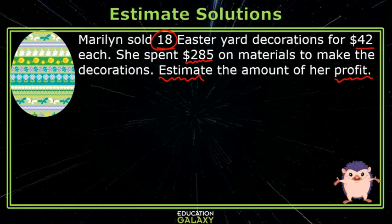So we're going to estimate, and we'll round 18 to 20, we'll round the $42 to 40, and then multiply. So Marilyn brought in approximately $800.